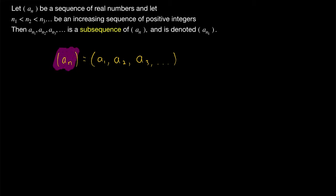Consider an arbitrary sequence a_n, which we might represent as just an ordered list of numbers: some first term a_1, some second term a_2, a third term a_3, and so on. Notice that our indexing variable here for our typical sequence notation is n. That means n is the variable being used to index the different terms of the sequence. n equals 1 refers to a_1, the first term. n equals 3 refers to a_3, the third term. a_n is the nth term of the sequence.